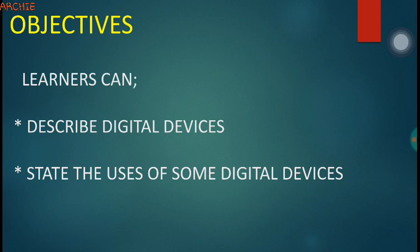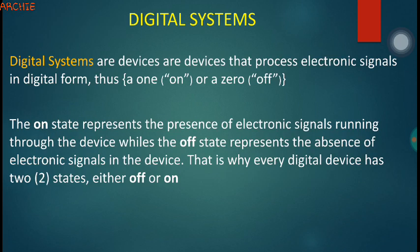Before we start, we'll look at what indicator devices or systems are. When we talk of digital systems or devices, we are referring to devices that are able to store, process, and send digital information. Digital systems possess electronic signals in digital form — in zeros, that's the off state, or in ones, that's the on state. The on state represents the presence of electronic signals, while the off state represents the absence of electronic signals. That is why every digital device has two states: either off or on.